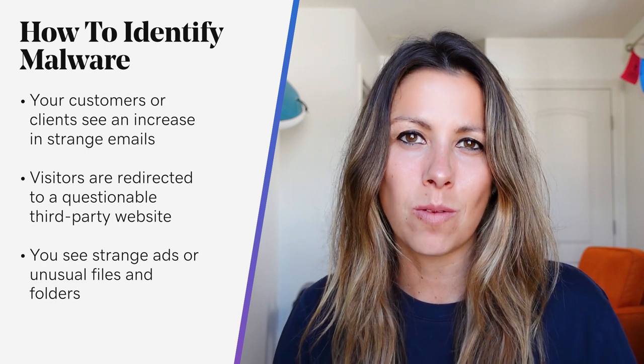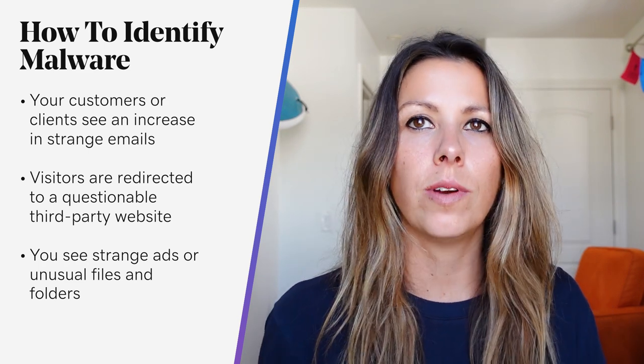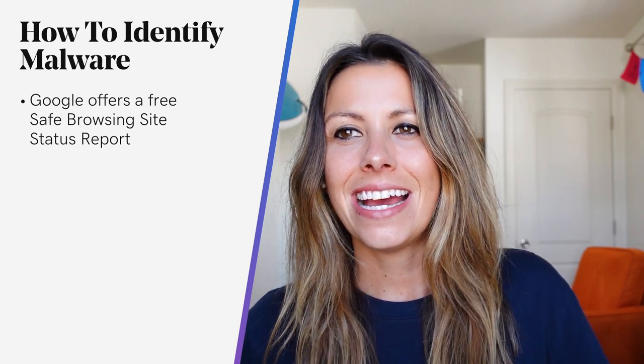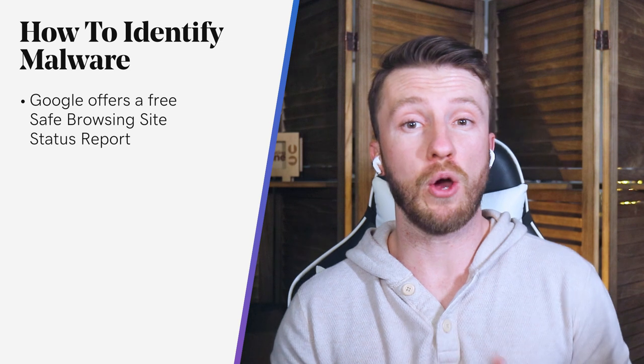Once you notice one or more of these signs, there are a handful of ways to confirm your suspicions, starting with a Google Safe Browsing Site Status Report. Google offers a free safe browsing site that you can use to scan your entire website for malware. Once the tool has finished the scan, it will notify you of any suspicious files and code containing malware. And if you are code savvy, you can manually inspect your site's files for malicious code. Malware is usually hidden in the .htaccess, PHP, or WordPress core files. It could also be in random HTML or scripts in general.